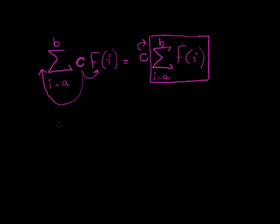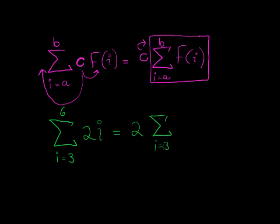So I'm not going to multiply it with every term. I'm going to keep it outside, first add up all of the terms, and then finally I'm going to multiply with C. So let's look at an example. Let's say we have the summation of i going from, let's keep it small, from 3 to 6 of 2i.